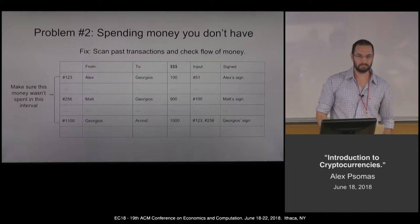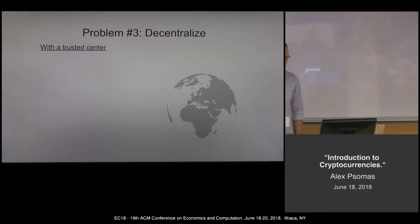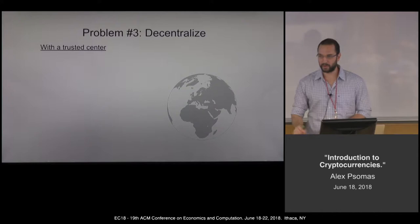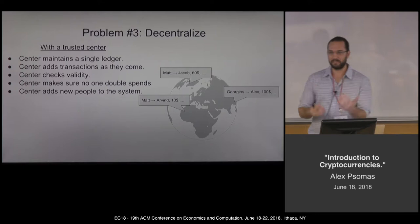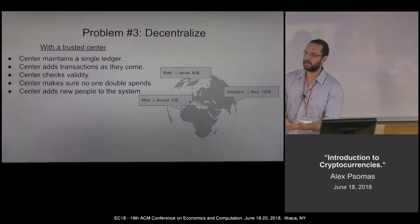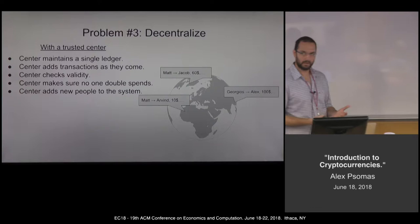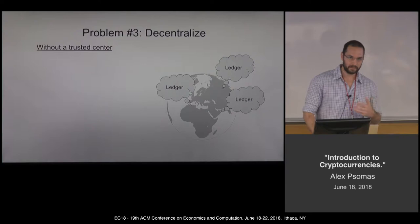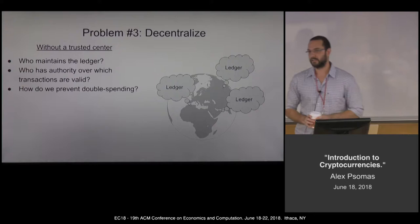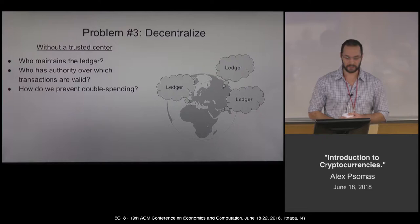So far so good. Now we're getting to the business. If we wanted to decentralize this — to run it outside of a room where everyone is telling me what I'm doing and I'm writing down transactions — somewhere across the globe, it's easy to have a trusted entity, something we call the bank. The bank will just maintain this ledger, write down transactions that come, check if all the signatures are okay, check if everyone has the money they're spending, and even add new people to the system. But the key problem we'll be trying to solve is: what do we do without a trusted entity? Who will maintain this ledger? If there's some dispute, who will decide what transactions are valid? And who will make sure there's no double spending?